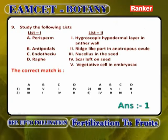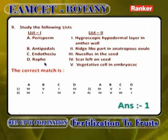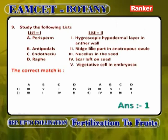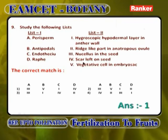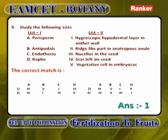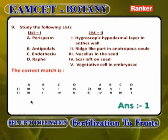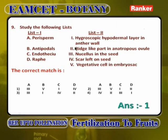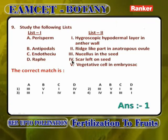Matching: Perisperm is nucellus in the seeds, so A is 3. Antipodals are vegetative cells of the embryo sac, so B is 5. Endothesium is the hygroscopic hypodermal layer of the anther wall, so C is 1. Raphae is the ridge-like portion on the anatropous ovule, so D is 2. Answer is 1.